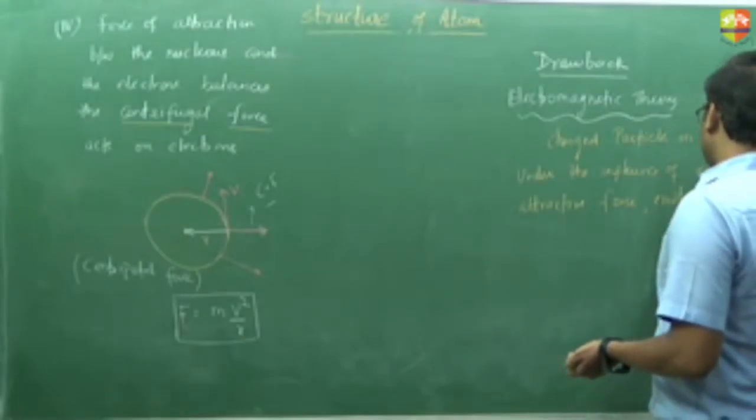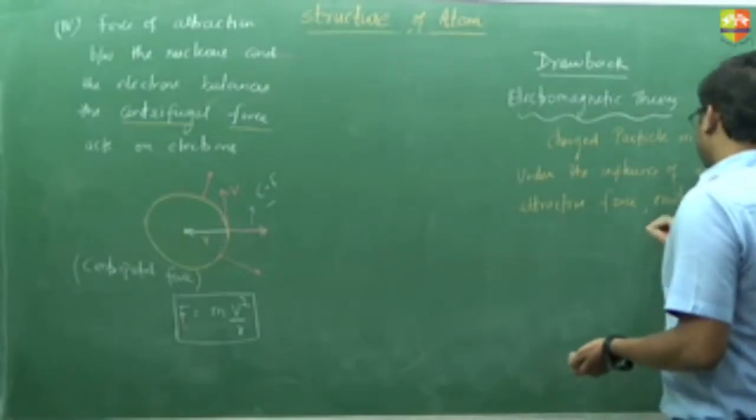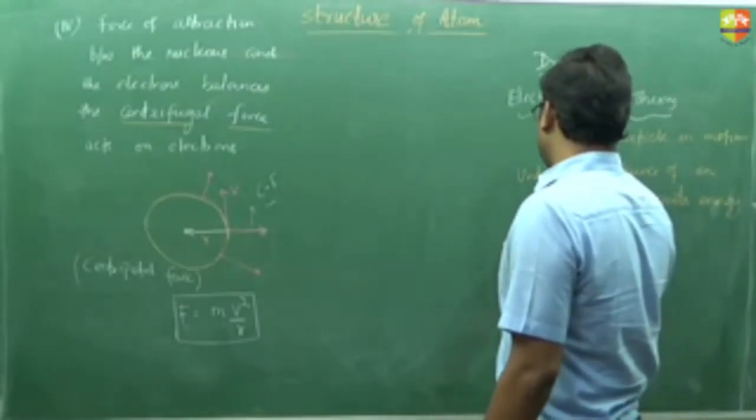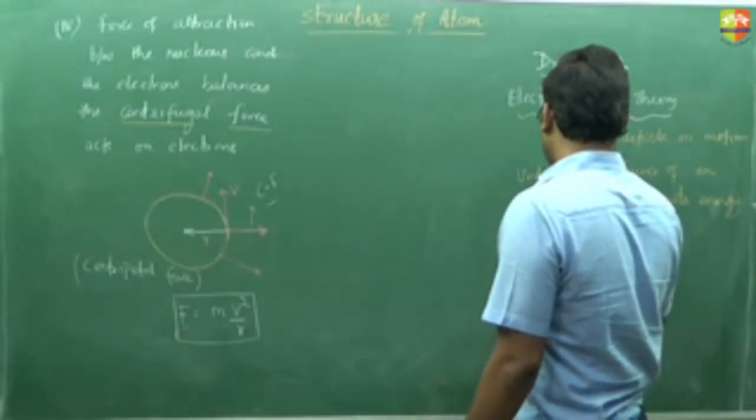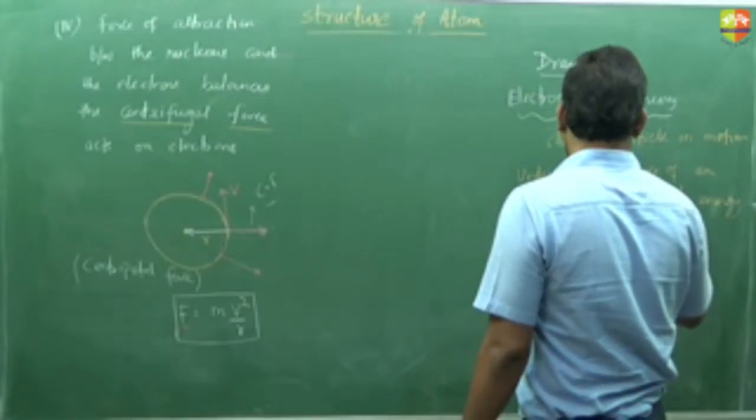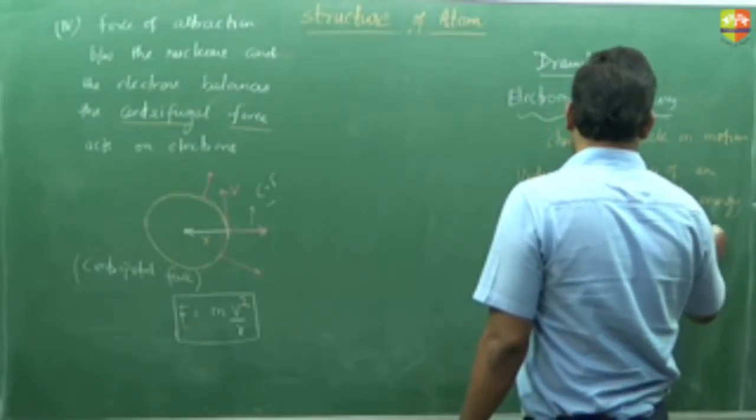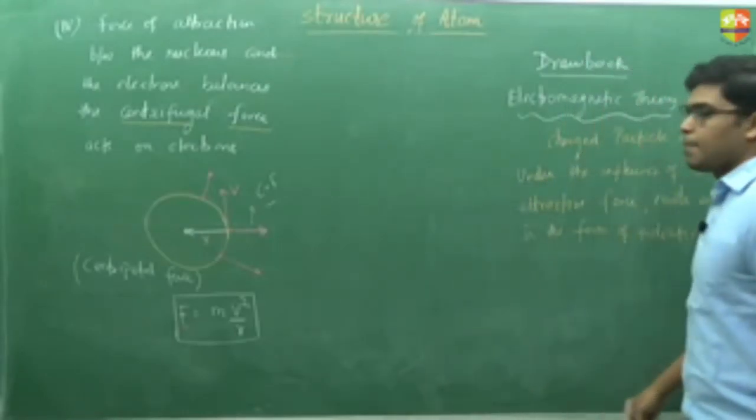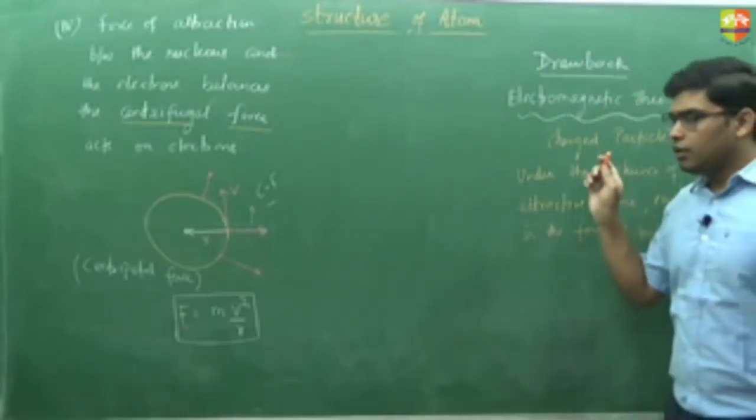So in every turn the charged particle has to emit energy. For example, suppose the electron is moving in this path. Since it is moving under the influence of an attractive force which is towards the nucleus, it has to release energy in every turn.